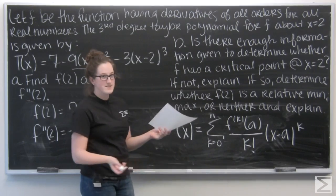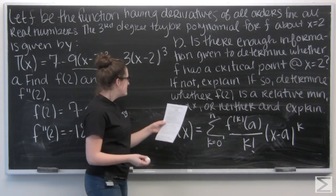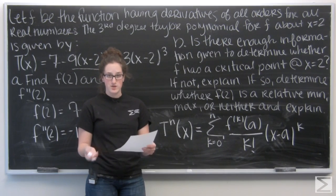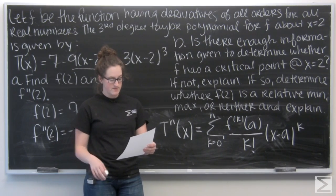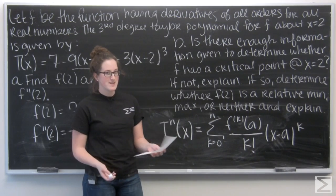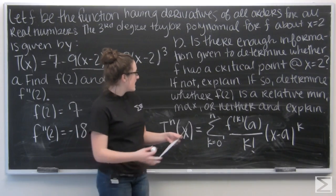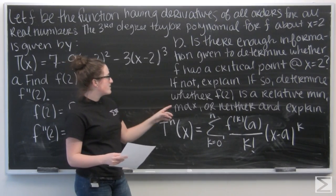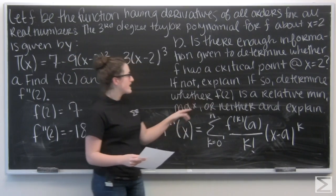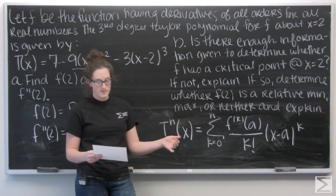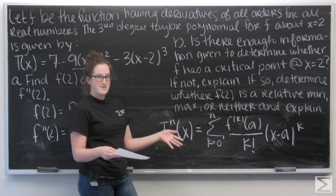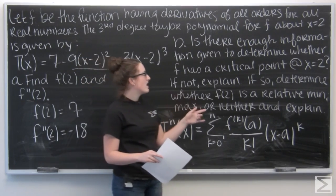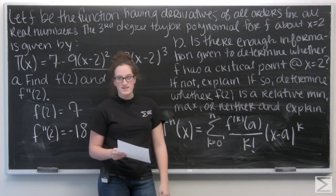Okay, so that's everything I need for a. Let's move on to b. That's a lot of words. So, b asks if there's enough information to determine whether f has a critical point at x equals two. And if not, explain why not. And if so, determine whether f of two is a relative minimum, maximum, or neither. And explain. A lot of stuff to do.